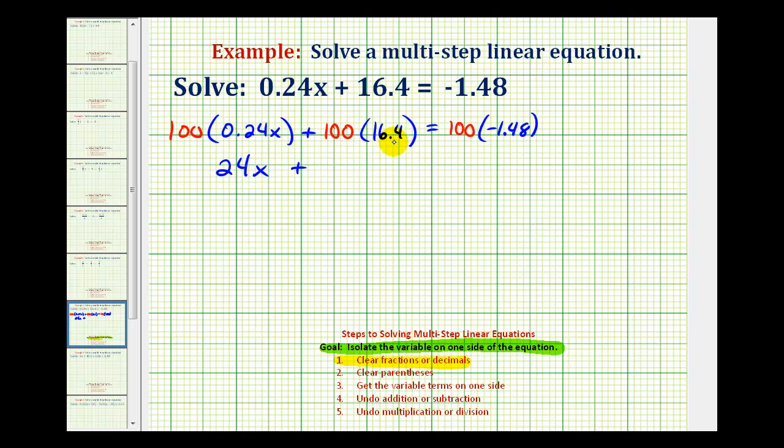For the second product, we would have one thousand six hundred forty. Remember, here we have to add a zero because this number only contains one decimal place, and this would equal negative one hundred forty-eight.